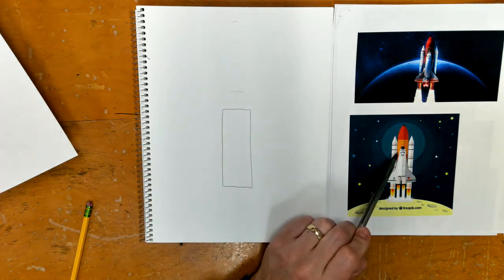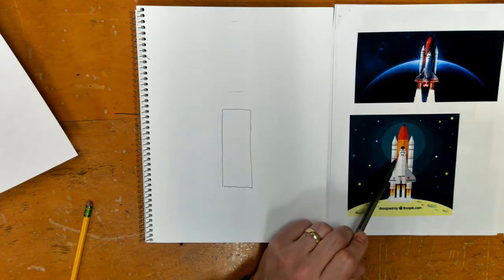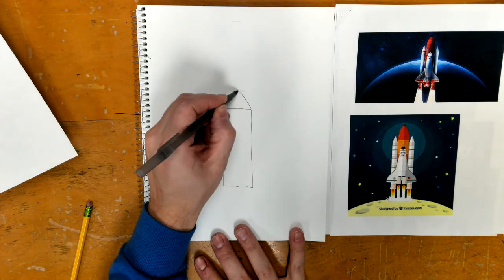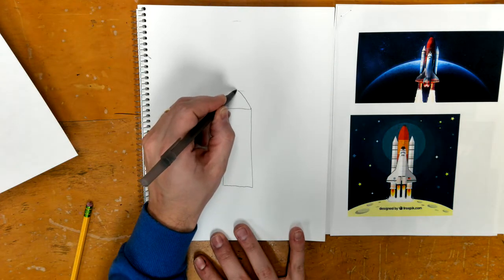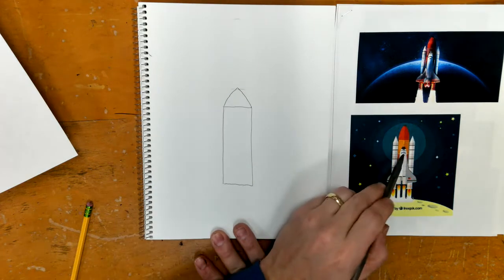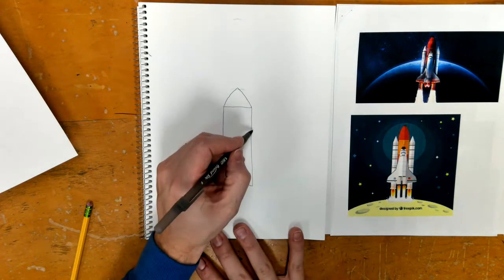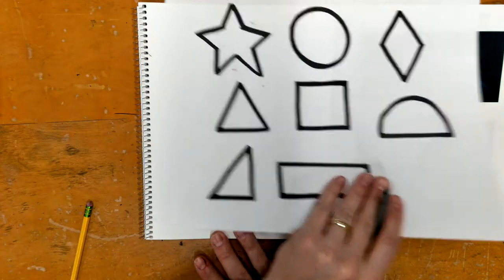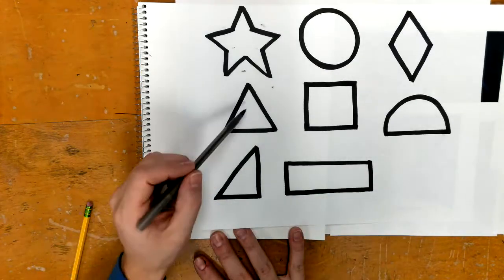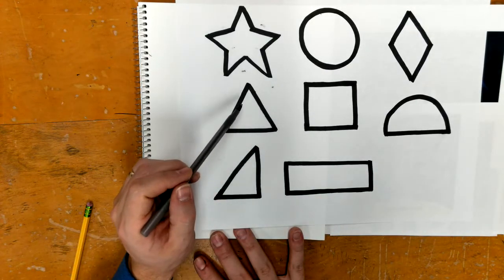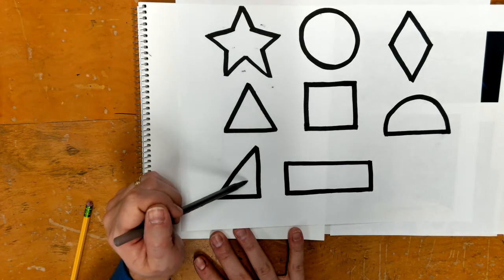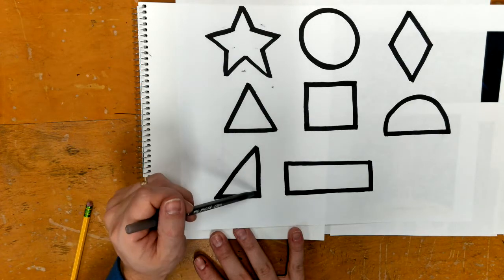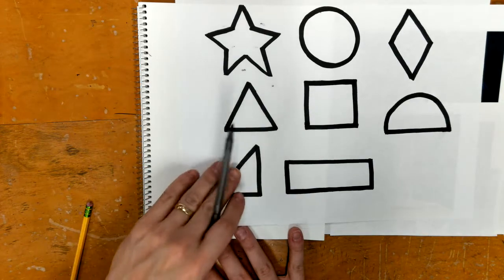So that rectangle is basically the main part of this spaceship. After I have that, then I'm going to make the pointy part of my space shuttle, and then now I need to add the wings that are on it. So for that, I'm going to go back to my shape sheet, and I use this type of triangle for the top, the pointy part of the spaceship, but I'm going to use a right triangle, one that has a flat kind of corner and then this long angled part for my wings.